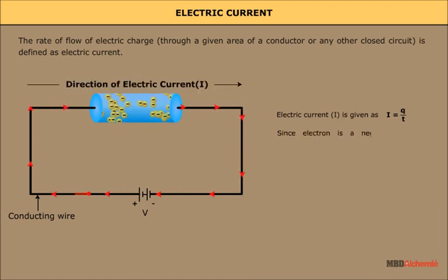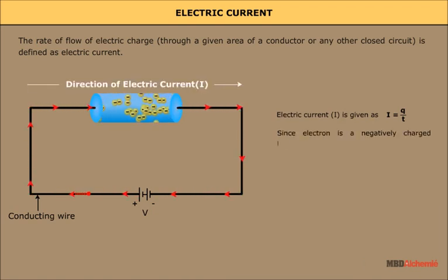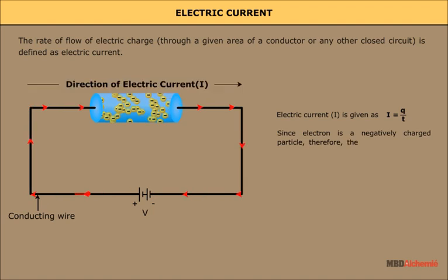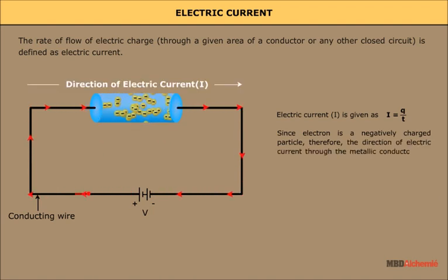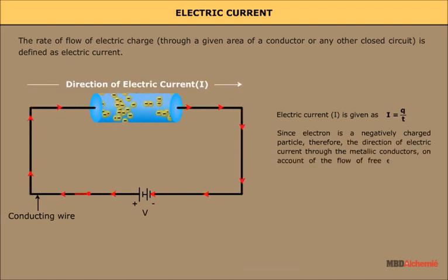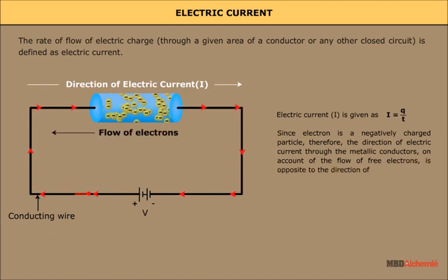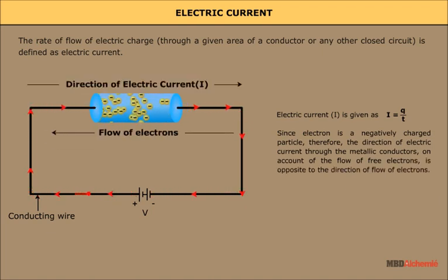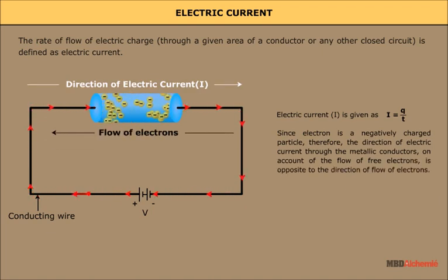Since an electron is a negatively charged particle, the direction of electric current through metallic conductors on account of the flow of free electrons is opposite to the direction of flow of electrons.